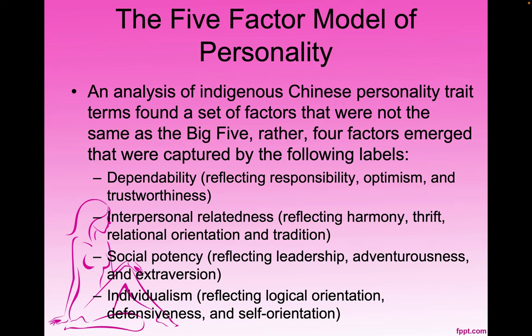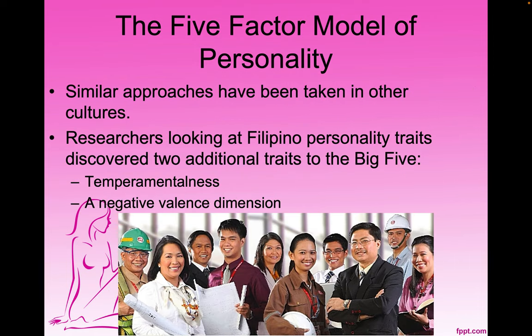The Chinese Big Four factors were: dependability — reflecting responsibility, optimism, and trustworthiness; interpersonal relatedness — reflecting harmony, thrift, relational orientation, and tradition; social potency — reflecting leadership, adventurousness, and extroversion; and individualism — reflecting logical orientation, defensiveness, and self-orientation. Notably, individualism and social potency were seen as negative traits in the Chinese collectivist context.